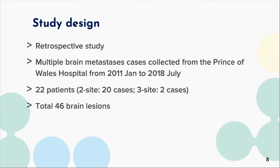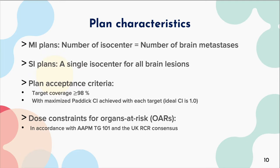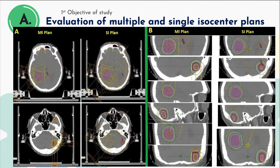Twenty-two patients with two to three brain metastases were retrospectively recruited, with a total of 46 lesions identified. MI and SI plans were generated using the Eclipse system with non-coplanar static IMRT beams and micro-MLCs. The acceptance criteria were that at least 98% of PTV was covered by the prescribed isodose line, with maximized Paddock CI and acceptable OAR doses. Here is an illustration of isocenter location and dose distribution in plans using the two approaches respectively.